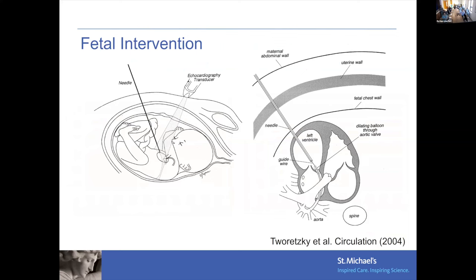Extrapolating that back to the fetal population, over the past 20 years or so, fetal interventions for aortic valve stenosis have been performed. Knowing that some fetuses with aortic valve stenosis will develop hypoplastic left heart syndrome requiring single-ventricle palliation, fetal aortic valvuloplasty has been offered. It's obviously much more complicated, done in conjunction with high-risk obstetrics, but very much like postnatal aortic valvuloplasty — a balloon is guided across the aortic valve and inflated to reduce the degree of stenosis.